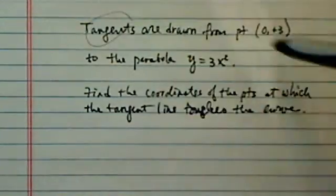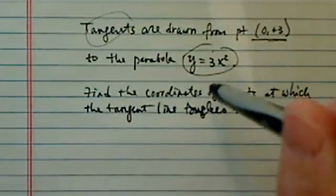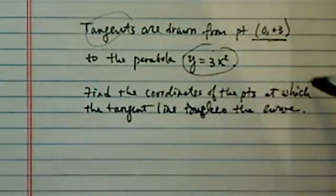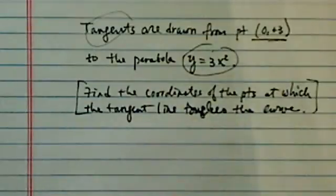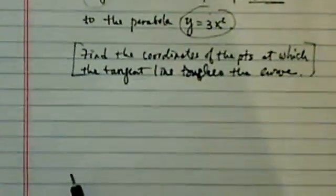It says that tangent lines are drawn from one point to this curve, and they want to know where does the tangent line touches the curve. This is a really interesting problem in that it combines quite a few geometric things, algebra things, along with calculus things.